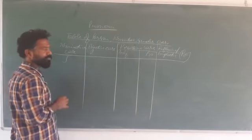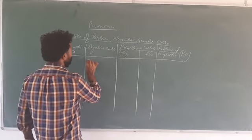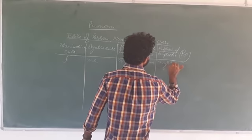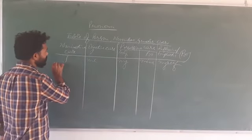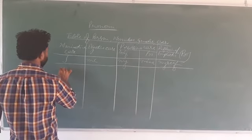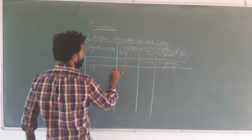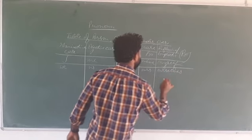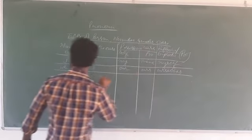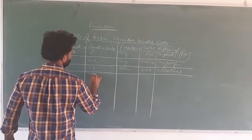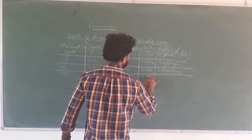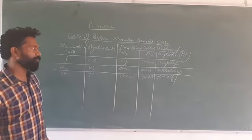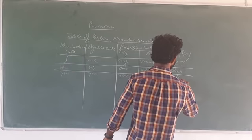First person singular: I, me, my, mine, and myself. First person plural: we, us, our, ours, and ourselves. Second person: you, you, your, yours — and yourself when singular, yourselves when plural.